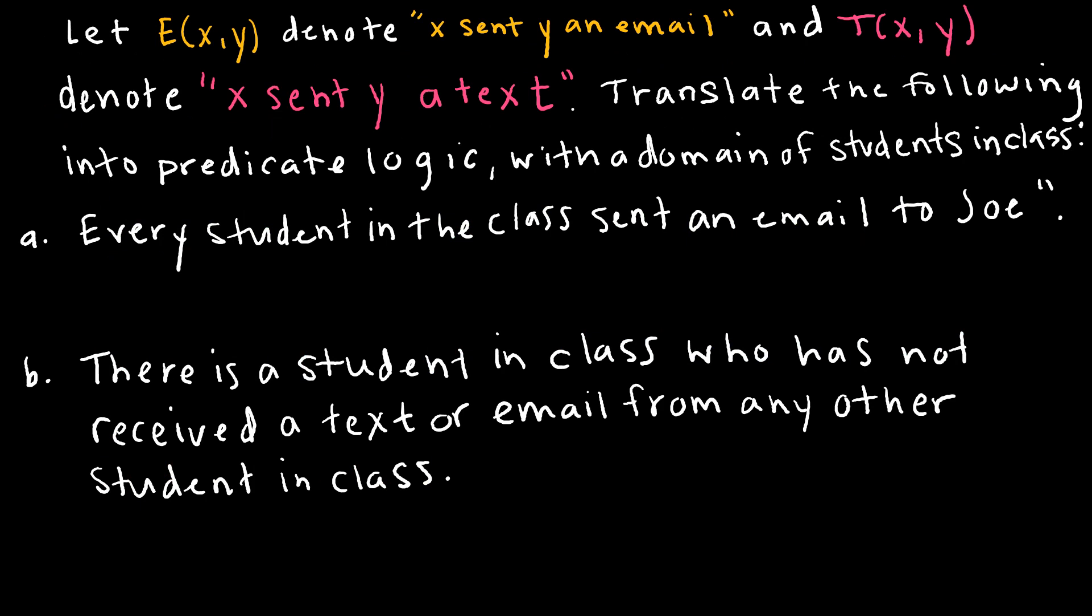So for this question you can see that it is a little bit different because we are looking at predicates that are already given to us. So E(x,y) denotes that x sent y an email and T(x,y) denotes x sent y a text. Now we're going to use those to translate the following.